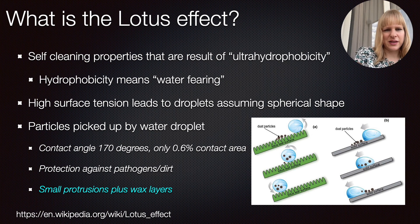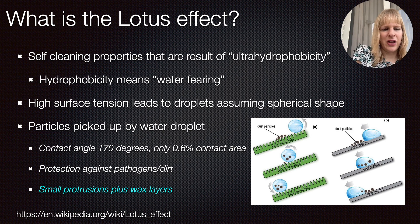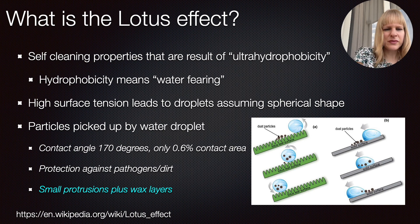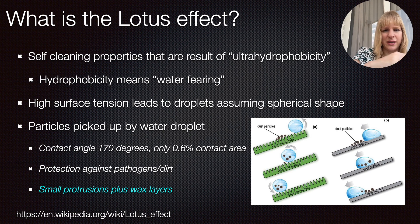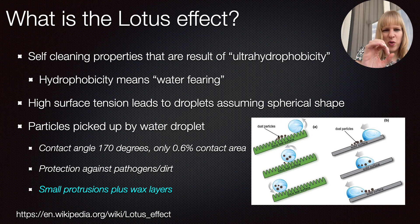What we measure is what we call the contact angle between the surface and the droplets. Because of that, it makes very minimal contact with the surface. For the lotus flower, this can go up to 170 degrees, so you get a nearly perfect spherical shape and a contact area of around only 0.6 percent. The lotus flower has a very rich kind of structure, so the water droplet really isn't in much contact with the surface at all — it's almost like you have little air pockets in between.